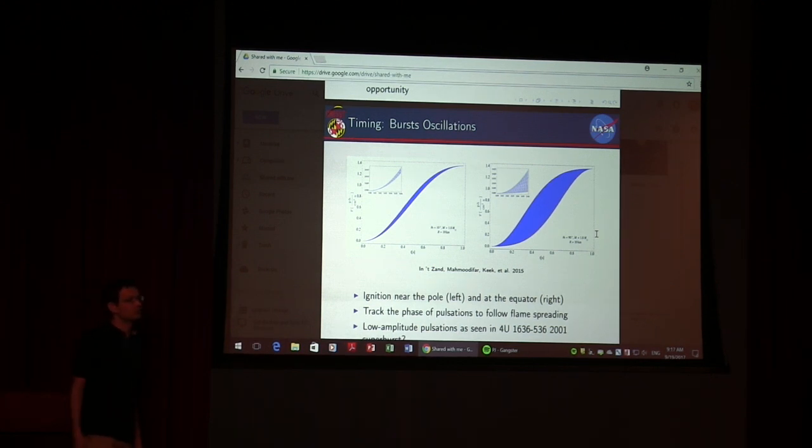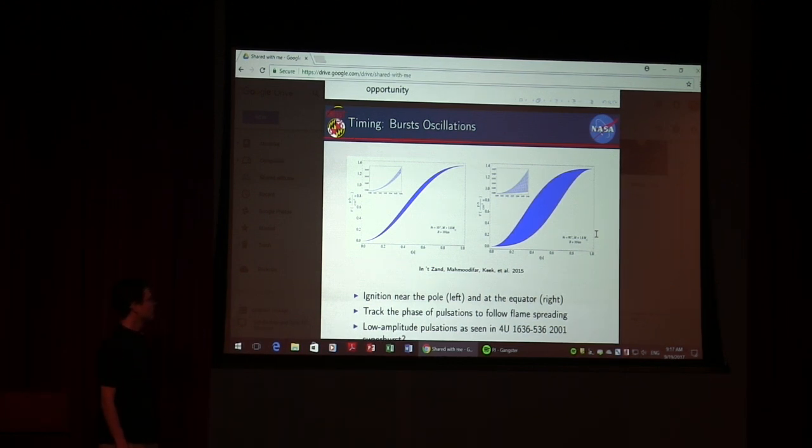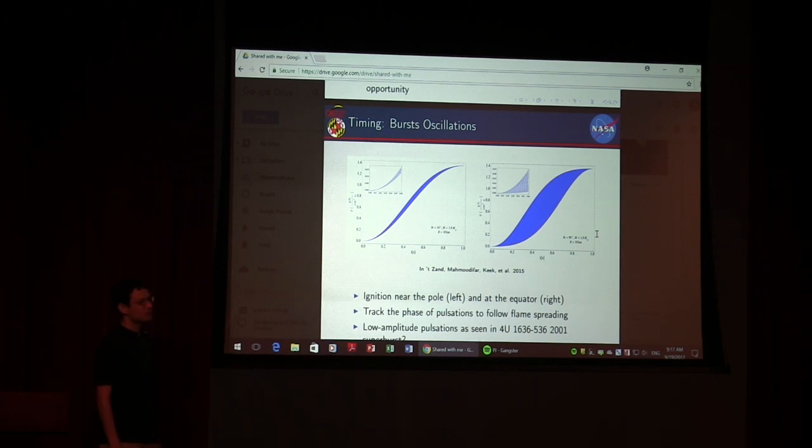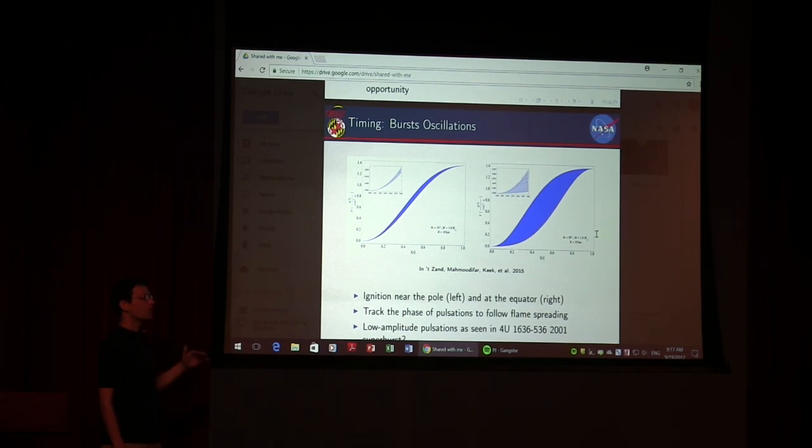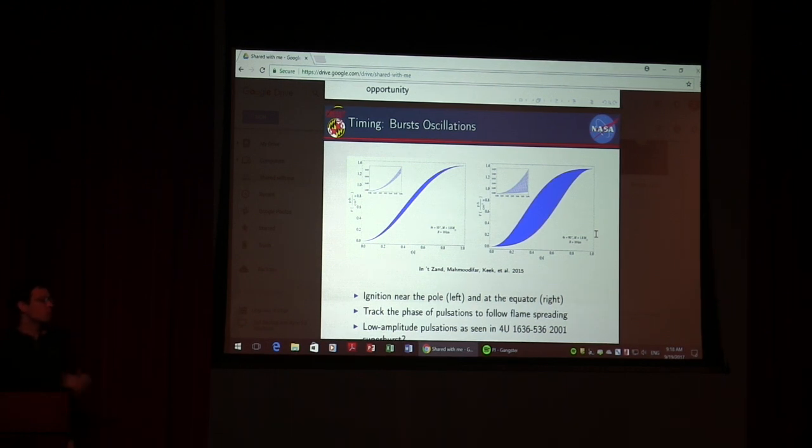During one superburst, one day-long burst, a special type of pulsations was seen in only one case, in one superburst in 1636 with PCA and RXTE. The PCA only saw two superbursts, so it saw it in 50% of the sample. These were pulsations at much lower amplitude and they were coherent. In the other case, because of changing phase, you have incoherent pulsations. We don't really know what that is, but perhaps with Strobe-X we'll be able to see it also during short bursts and not only this hour-long superburst. It could be an avenue for measuring spin frequency of more bursting neutron stars.